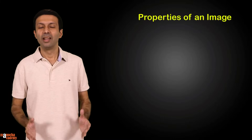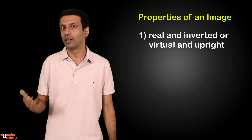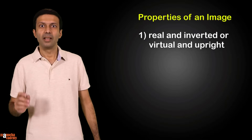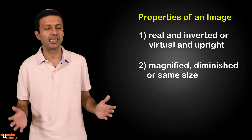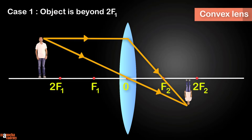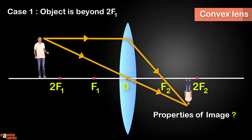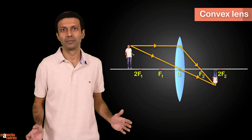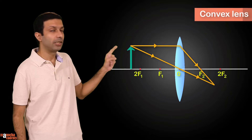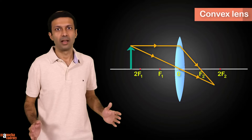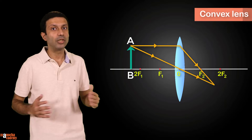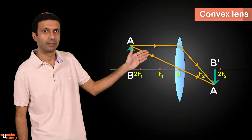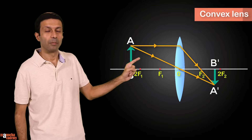So what are the properties of the image? There are three points to consider: first, is the image real and inverted or virtual and upright? Second, is it magnified, diminished, or the same size? And third, what is the position of the image? For Case 1, the image is real and inverted, it's diminished, and the image is formed between F2 and 2F2. In textbooks the object is shown with an upright arrow marked AB, and the image — also shown with an arrow — is represented as A'B', inverted because the image is an inverted image.